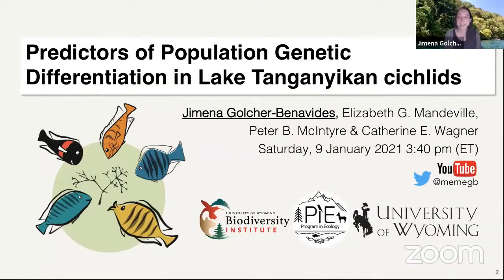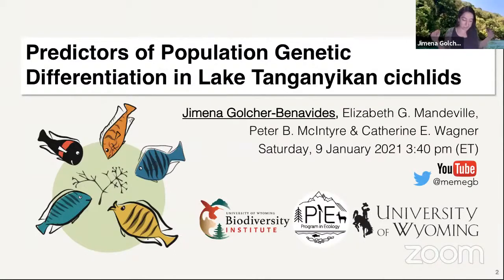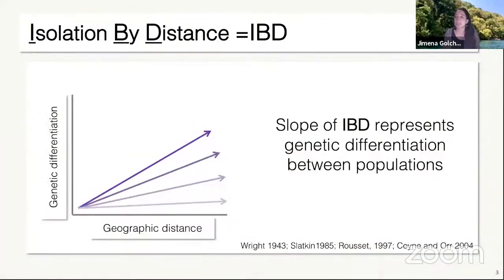Hello everyone, I'm very excited. Can everybody hear me? I'm very excited to present today some of my PhD dissertation research. I'm Ximena, a PhD candidate at the University of Wyoming. Today I'm going to talk specifically on predictors of population genetic differentiation. I modified the title a little bit for this talk. Let me introduce the concept of genetic differentiation — specifically isolation by distance. Natural populations within a species vary in how much gene flow they experience. Perhaps the most intuitive explanation for this differentiation is isolation by distance, in which reduction in gene flow is simply driven by the geographic distance separating those populations.